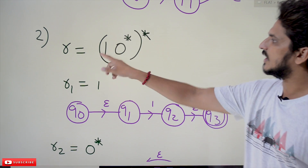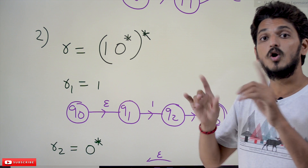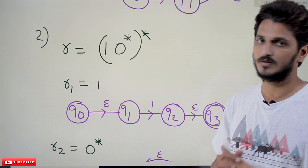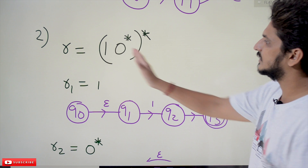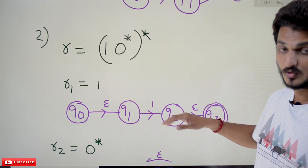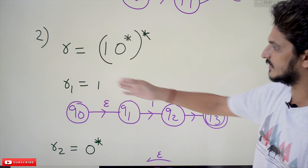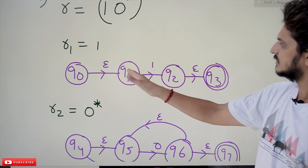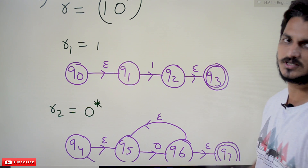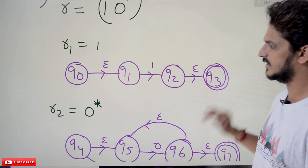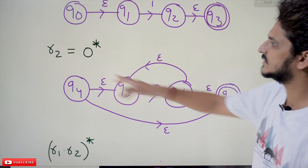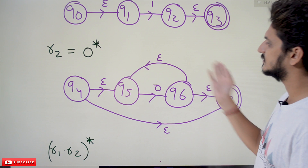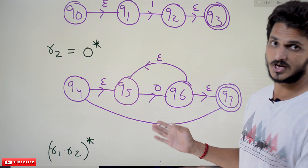The next example is very important to understand. Take r equal to (10*)* — this is what we want to convert into finite automata. Let r1 equal to 1; the finite automata for 1 moves to the final state on input 1, using epsilon moves. Let r2 equal to 0*; we already discussed this — this is the finite automata for 0*.